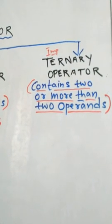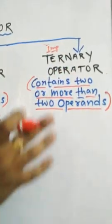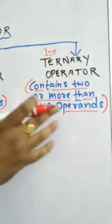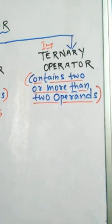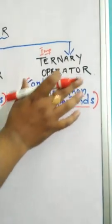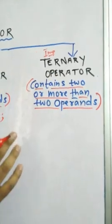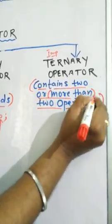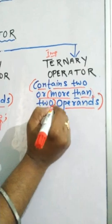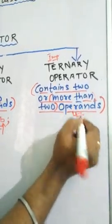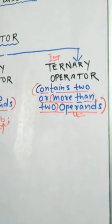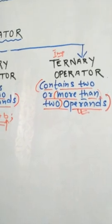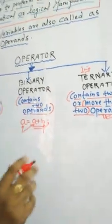This is part one video, so we are discussing just the introduction. In the next part two video I will explain some practical knowledge about ternary operators. For the introduction, a ternary expression contains more than two operands — meaning more than two variables.